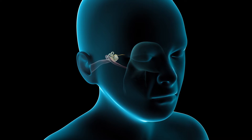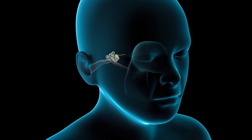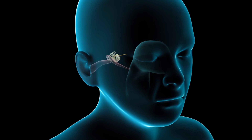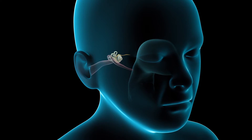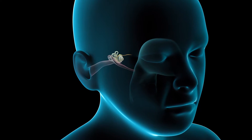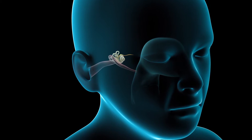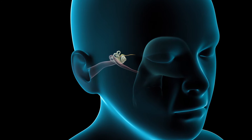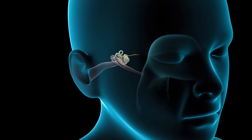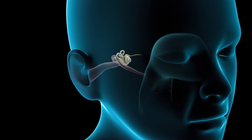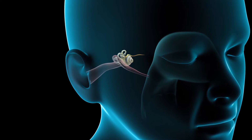A myringotomy, also known as a tympanostomy or tympanotomy, is a surgical procedure to remove fluid in the middle ear and re-establish equal air pressure on both sides of the eardrum.